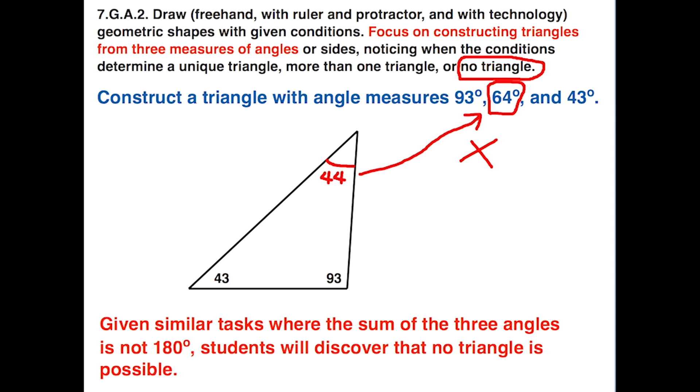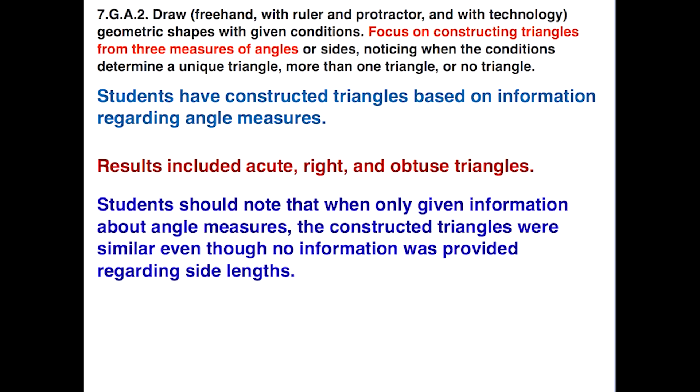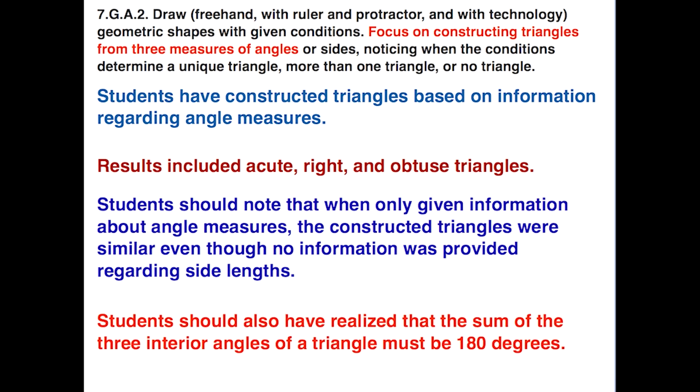So given similar tasks where the sum of the three angles is not 180 degrees, students will discover that no triangle is possible. So far, students have constructed triangles based on information regarding angle measure. The results included acute, right, and obtuse triangles. Students should note that when only given information about angle measures, the constructed triangles were similar even though no information was provided regarding side lengths. And students should also realize that the sum of the three interior angles of a triangle must be 180 degrees.